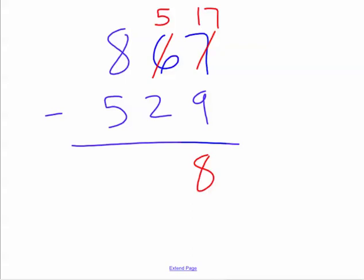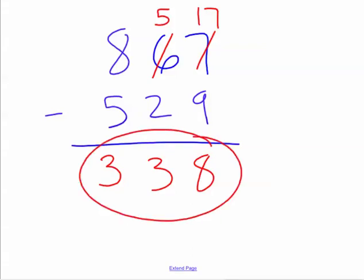Next, I look at the tens column. I now have 5 tens minus 2 tens, and that is 3 tens. Then I have 8 hundreds minus 5 hundreds, which is 3 hundreds. My solution is 338.